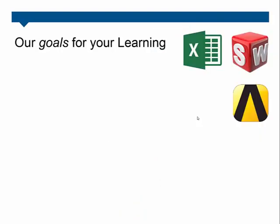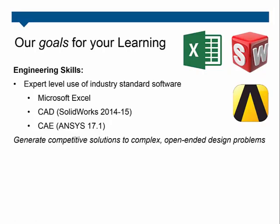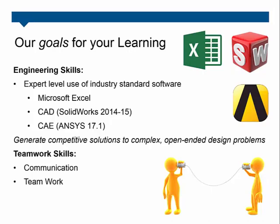Let's talk about our goals for your learning this semester. We've got a range of engineering skills we want to ensure you're capable and competent in before you go off into industry. We want you to be able to use standard industry software like Excel, SolidWorks, CAD, and also ANSYS FEA and CFD at an expert level. With those tools, we're hoping you'll generate very competitive solutions to complex and open-ended design problems that you and your teams identify and figure out the best way to solve. In terms of teamwork skills, we want you to be strong communicators, work effectively in small groups, and have some experience of management and leadership. There may be opportunities to practise your conflict resolution skills throughout the semester, and we'll assist with that.